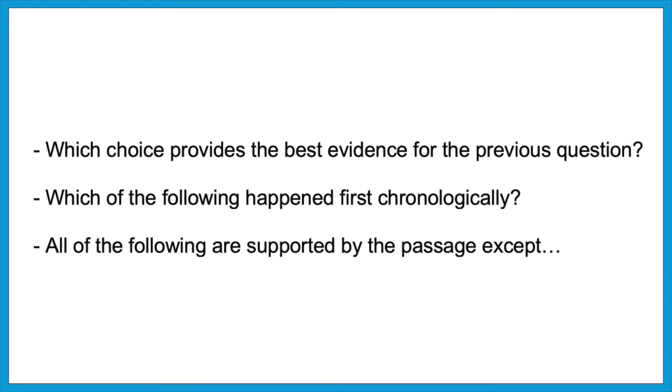Some students feel like this slows them down, but they soon see how much it helps them avoid wrong answers the test wants them to see — like an answer where only half a statement is true, or one with true information from somewhere else in the passage. If you can come up with your own prediction, you're far less likely to be tempted by those choices. Note that you can't predict on every question — for questions like 'which choice provides the best evidence' or 'which happened first chronologically,' you have to look at the answers first.